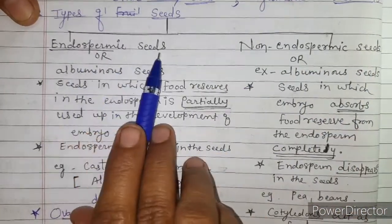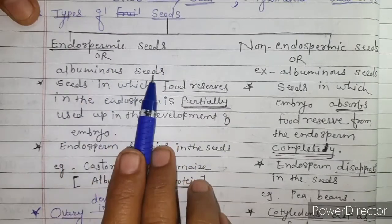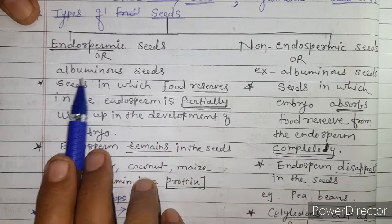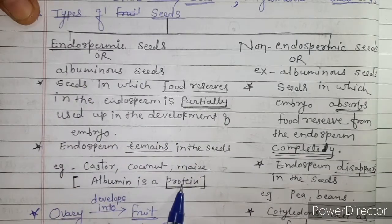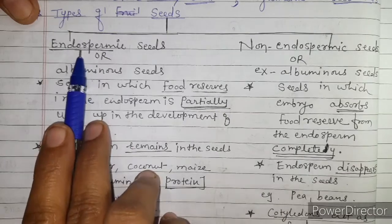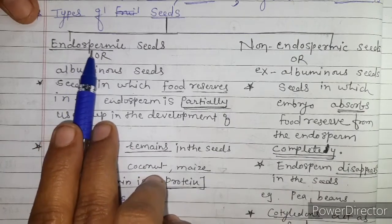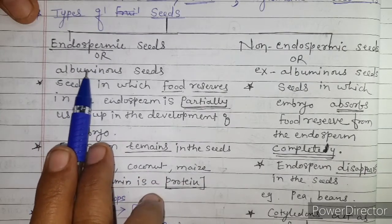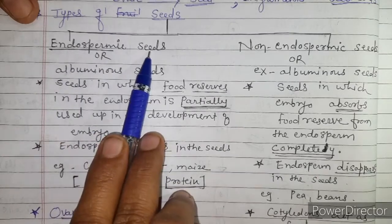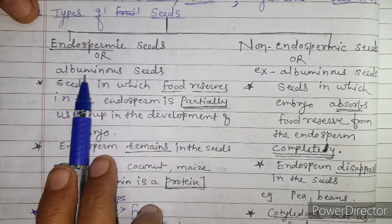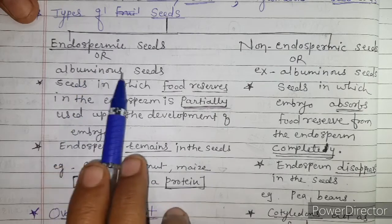Endospermic seeds are also called albuminous seeds. Albumin is a type of protein, and you know that endosperm is a nutritive tissue — it contains food reserves. So albumin is the food reserve, a type of protein. Since endospermic seeds contain albumin, they are also called albuminous seeds.